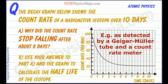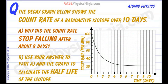The first question is: why did the count rate stop falling after about 8 days? It does stop falling — it seems to be flat after about 8 days. And secondly, we're asked to calculate the half-life of the isotope from our answer to part A.